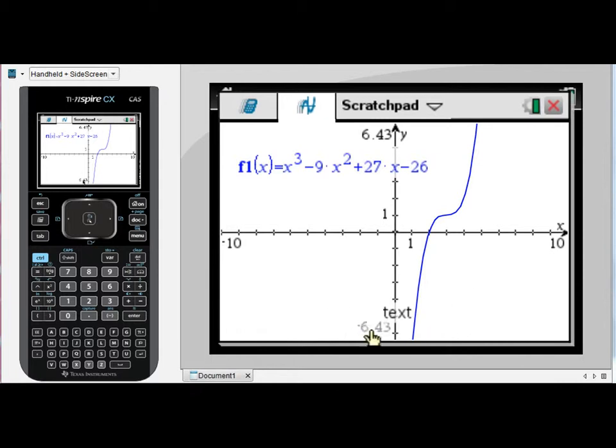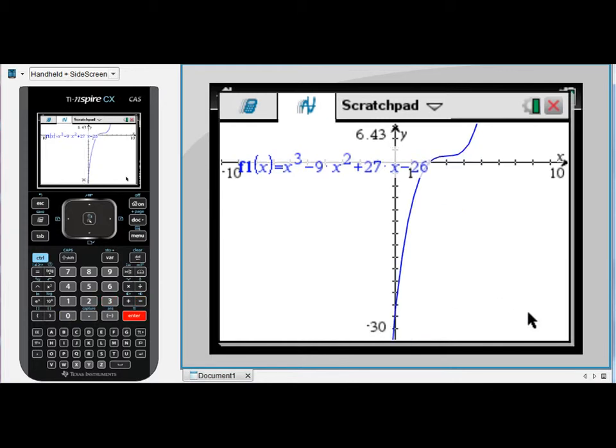And really it's this lower minimum y-value that's the problem. So we can change this simply by clicking on this and changing it to say negative 30 so that it will encompass that y-intercept at negative 26. And so now we can actually see what's going on.